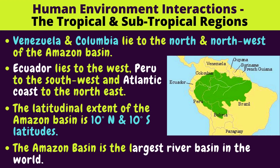Ecuador lies to the west, Peru to the southwest, and the Atlantic Coast to the northeast. The latitudinal extent of the Amazon Basin is 10 degrees north and 10 degrees south latitudes. The Amazon Basin is the largest river basin in the world.